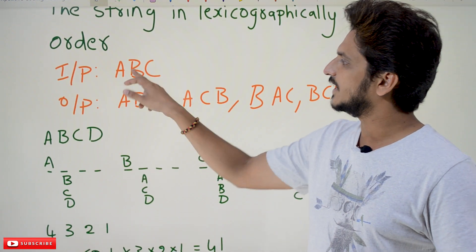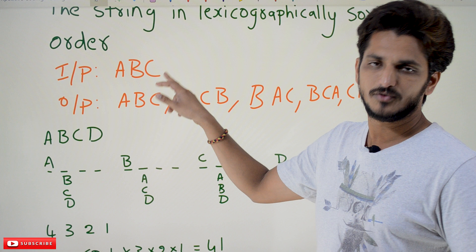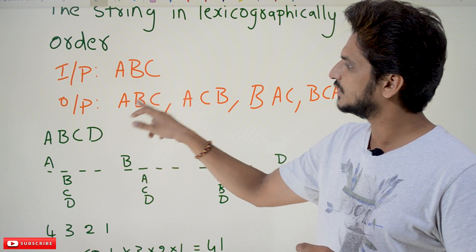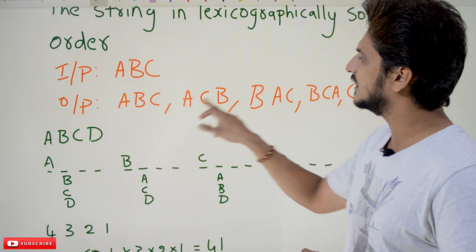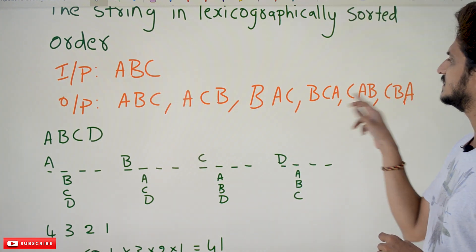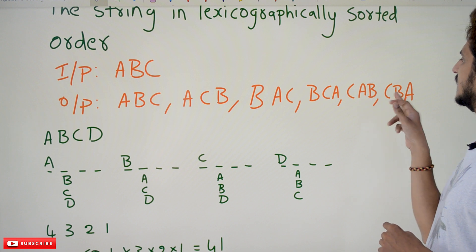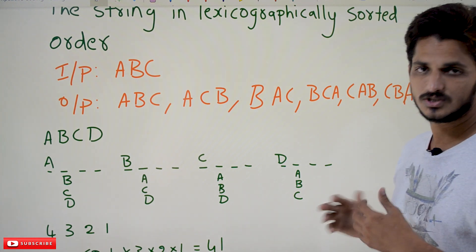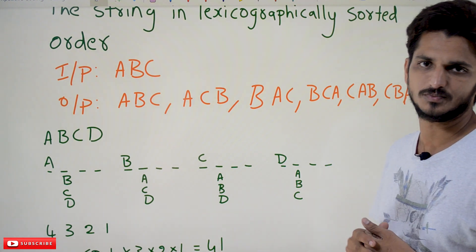So the input is ABC. If ABC is given, the output should be ABC, ACB, BAC, BCA, CAB, CBA. This is what you have to display.